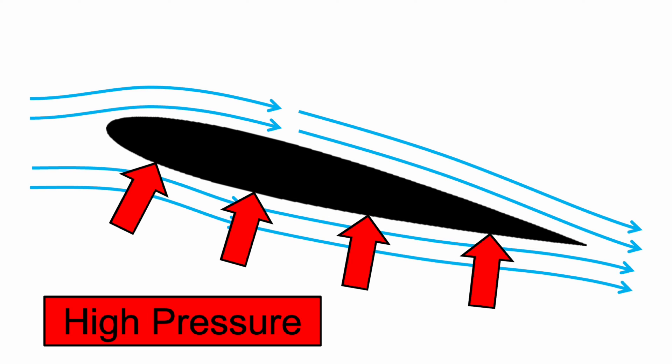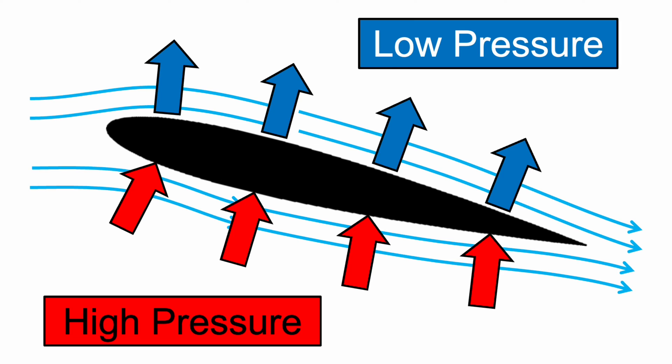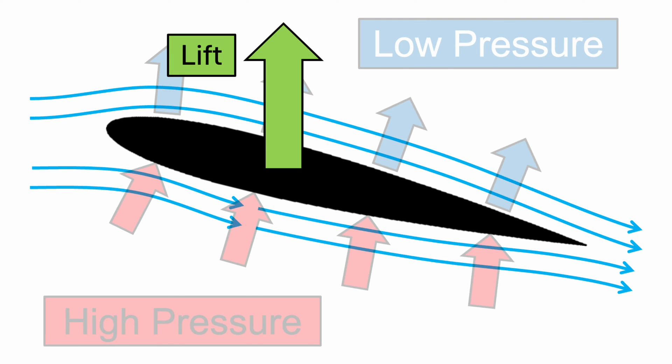Because air always flows from high pressure to low pressure, we know that for the streamlines to curve, the pressure on the top of the airfoil must be significantly lower than the free stream pressure, as denoted by blue vectors pointing away from the surface. Because the pressure force on the bottom is higher and on the top is lower than the free stream pressure, the result is a net upwards force called lift.